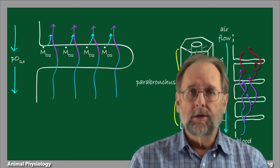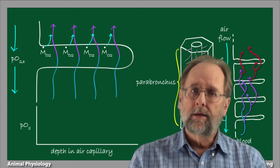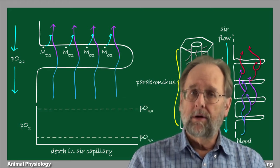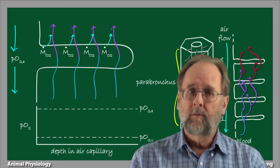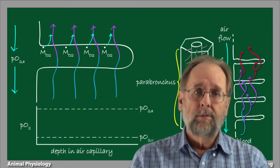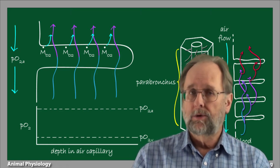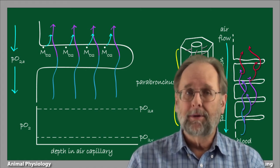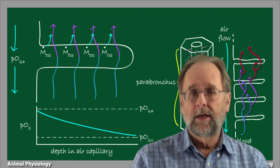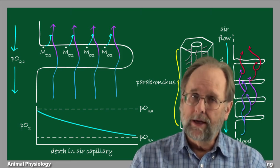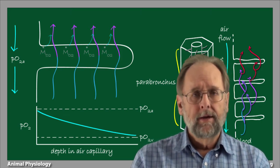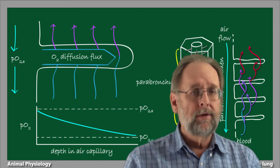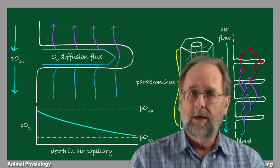Let's take a closer look at these partial pressures. Along the length of the air capillary, partial pressure of oxygen will be bounded above by the atmospheric oxygen partial pressure, PO2 sub A, and bounded below by the oxygen partial pressure in the venous blood, PO2 sub V. Because oxygen leaves the airspace of the air capillary along the capillary's entire length, there is a systematic decline of partial pressure along the length of the air capillary. This means that there will be a diffusion flux of oxygen along the length of the air capillary, driven by the gradient of oxygen partial pressure along the capillary's length.